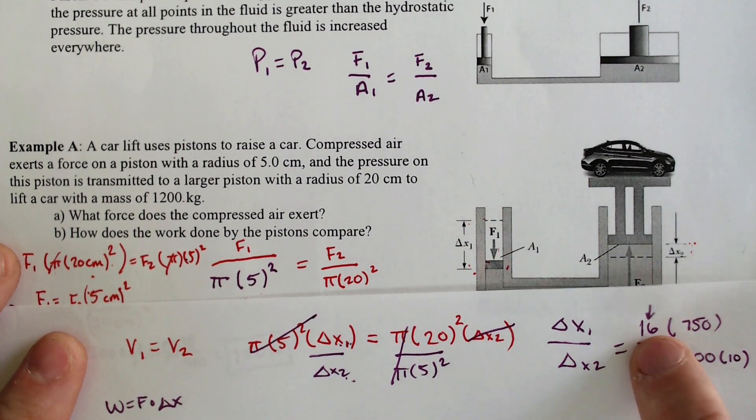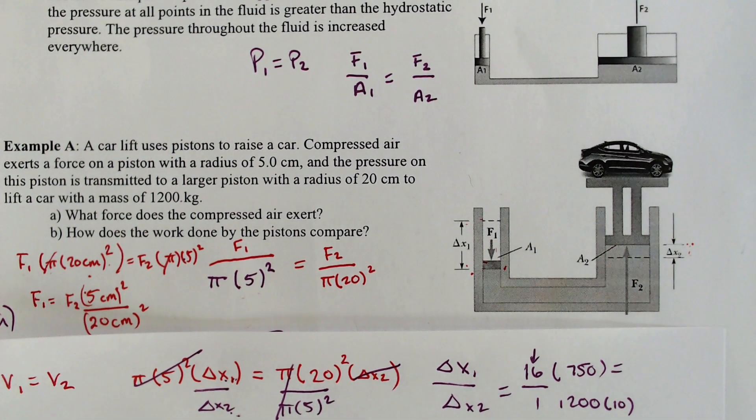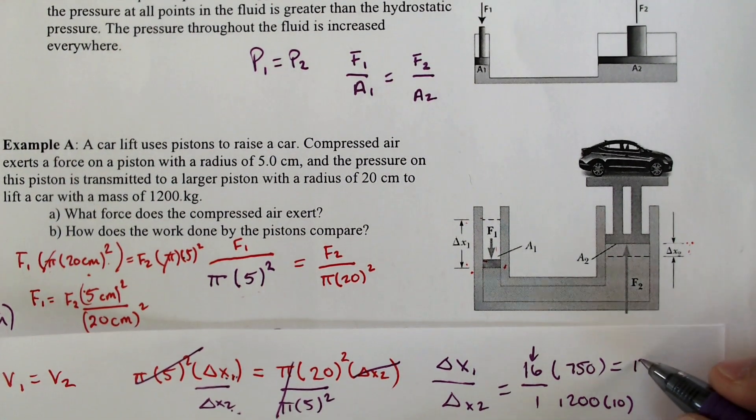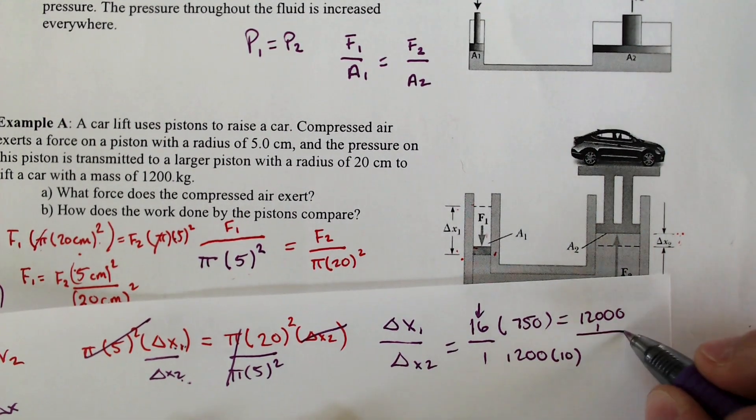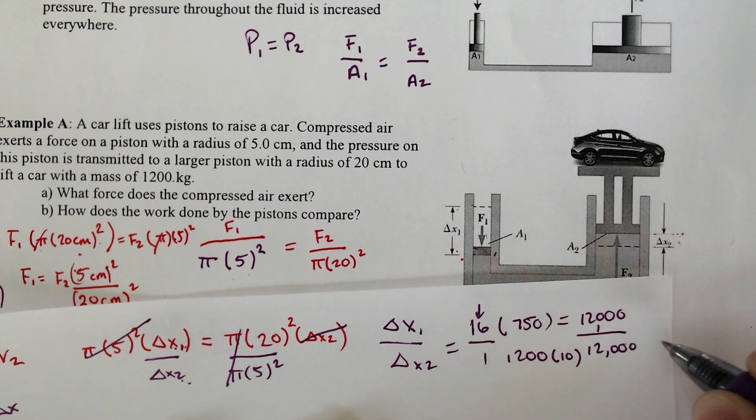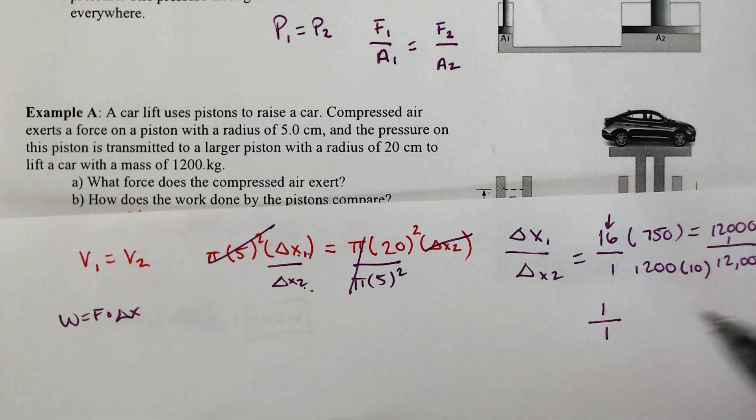We got our delta x. We need the force. 750 times 16 gives us 12,000 and so on and so forth. 1,200 times 10 is also 12,000. So that means that we have the work is 1 over 1.